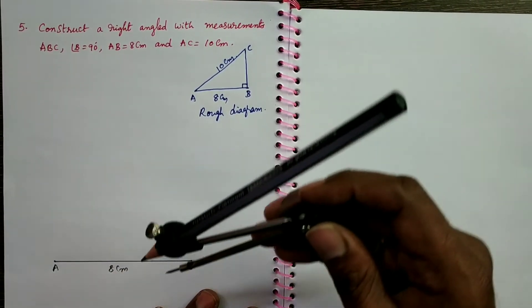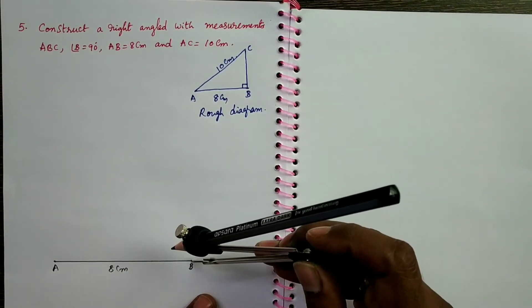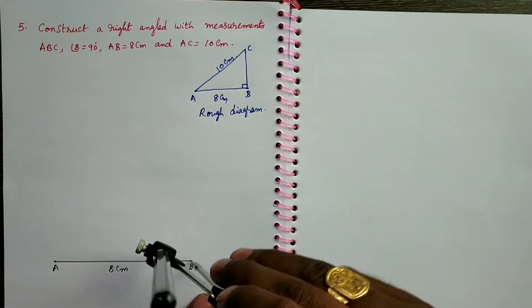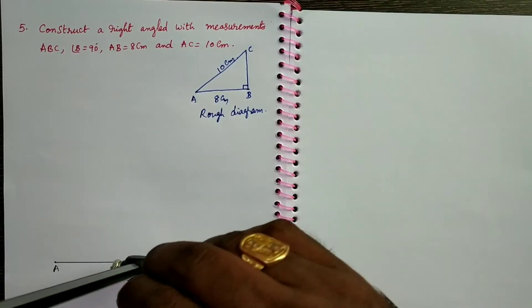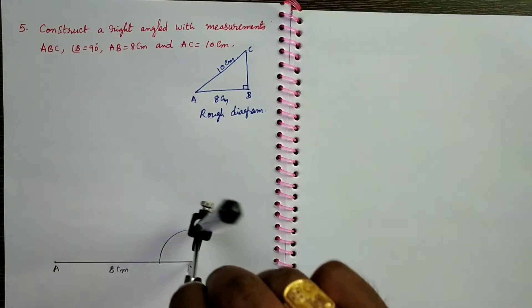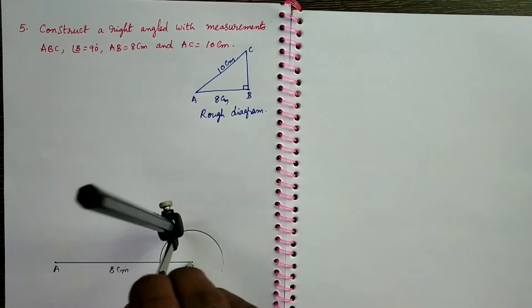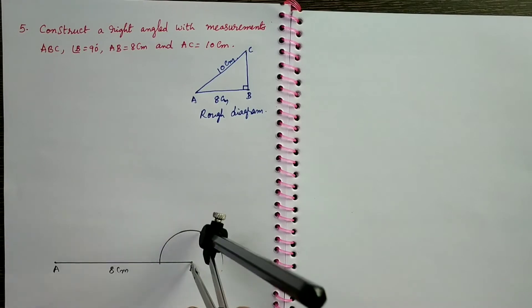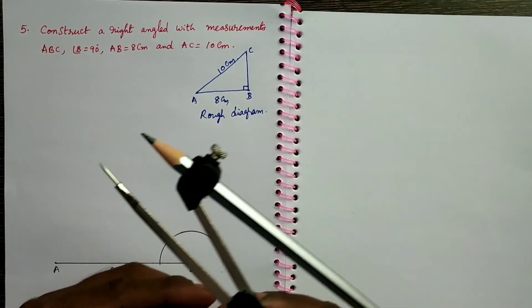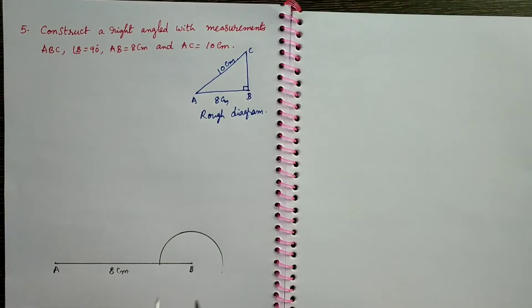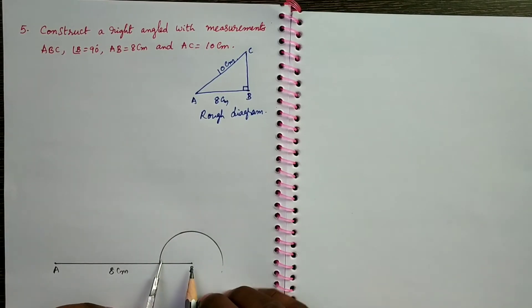Take B as center, draw an arc like this. It indicates 60 degrees.